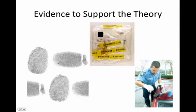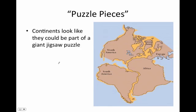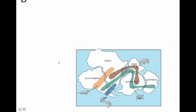With every theory you have to have evidence, so let's talk about what Wegener's evidence was. Probably the most obvious piece of evidence is the following: if we put all the continents back together, they seem to fit — they fit like a puzzle almost. That was one of his biggest pieces of evidence: that the continents look like they fit together like a giant puzzle piece.